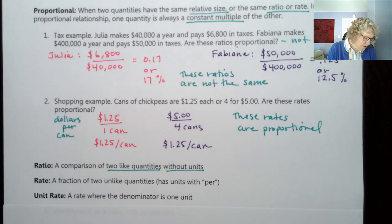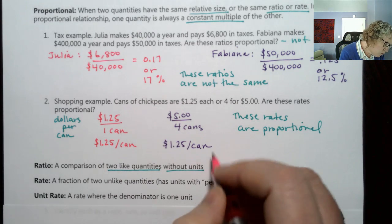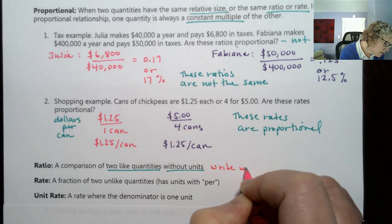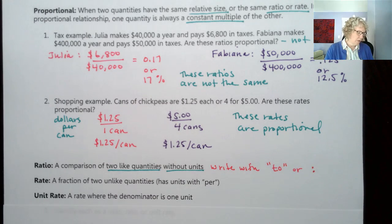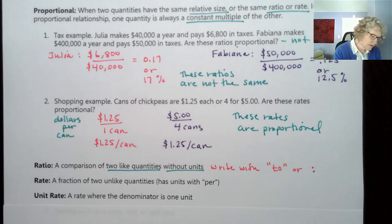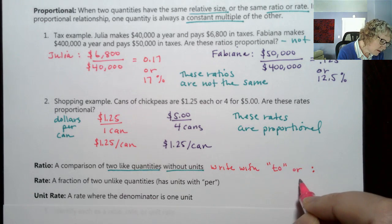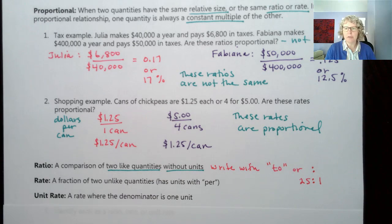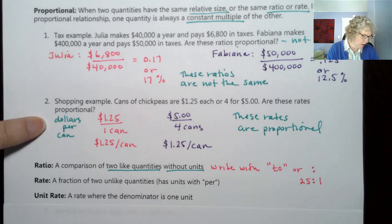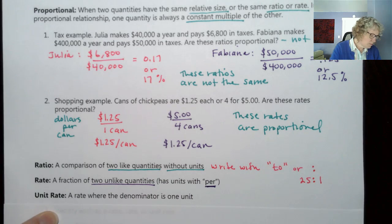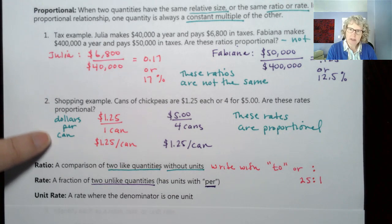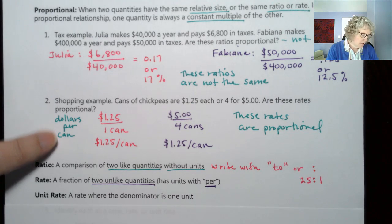So the units essentially cancel out and we don't have any units. In fact, I can see I need to write my dollar sign here. So essentially the units are canceling out. We don't have any units. You might think of this as a student to teacher ratio or they're all people. So we don't generally put units on that. So in a ratio, we often write with the word two or a colon. So you might see, for example, a student to teacher ratio might be, say, 25 to 1. That would be a ratio. We would write it like that. Then a rate, which I was using the word rate for this second one, is a fraction of two unlike quantities.